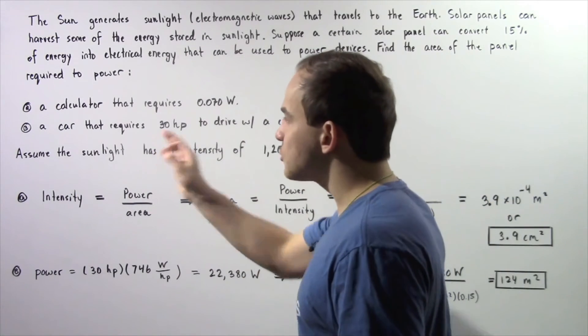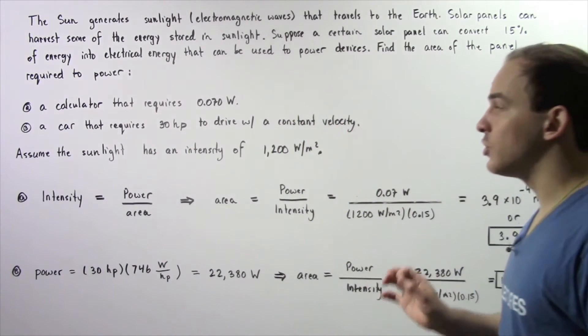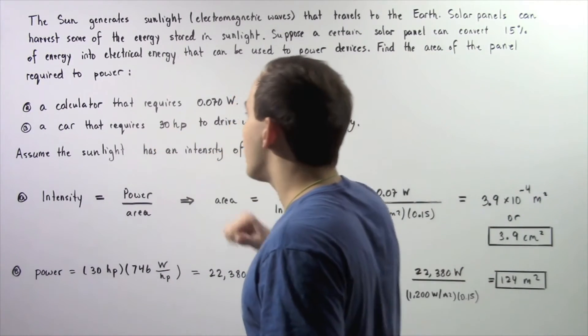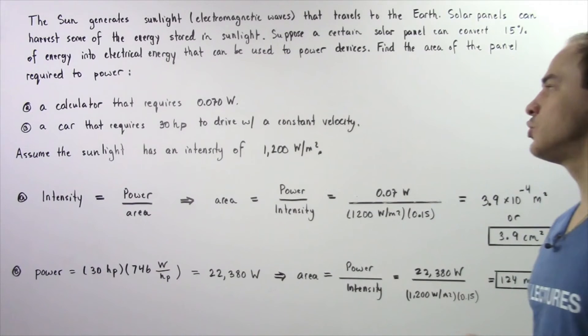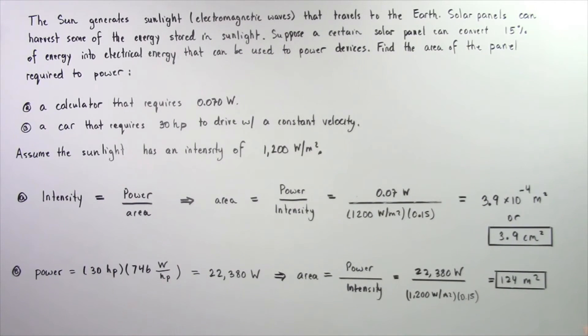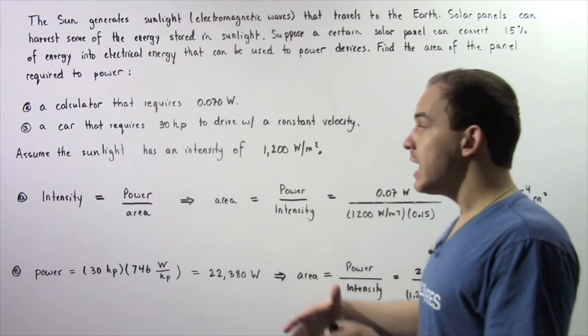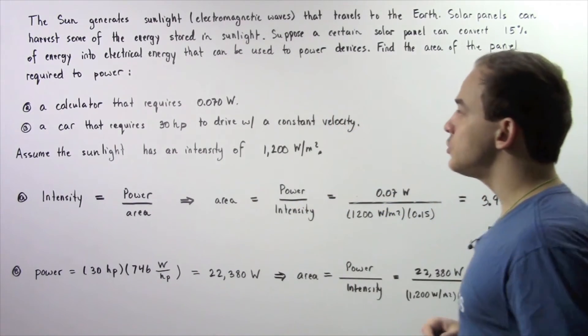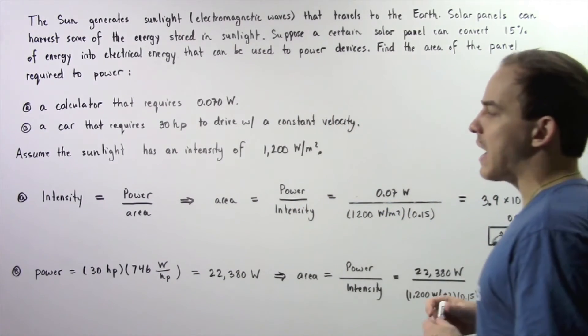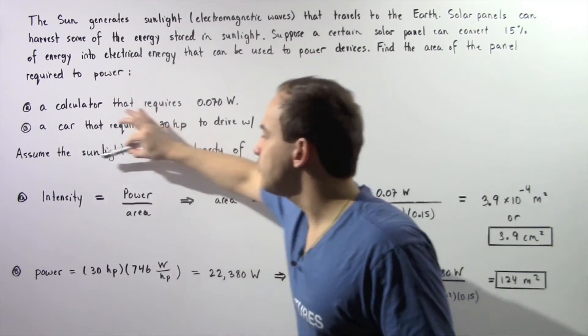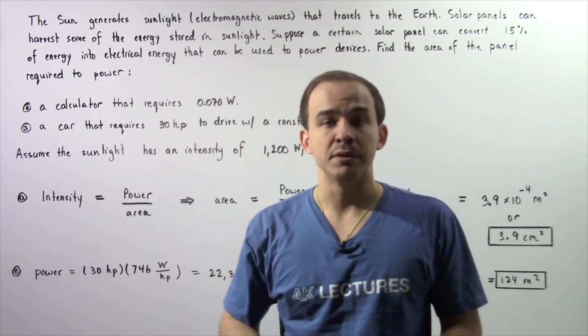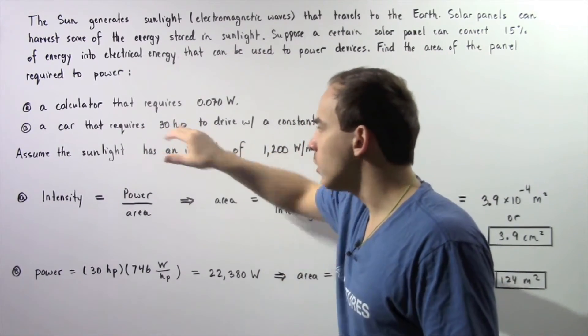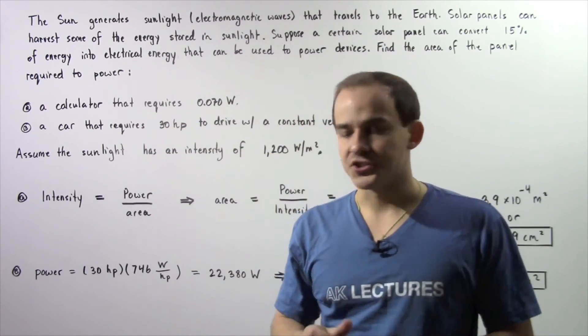Now let's move on to part B. Let's find what the area required is to power a car that requires 30 horsepower to drive with a constant velocity, and determine if this type of solar panel can be placed onto the rooftop of our car. We have to apply this formula, but before we apply the formula, we have to convert from horsepower to watts.